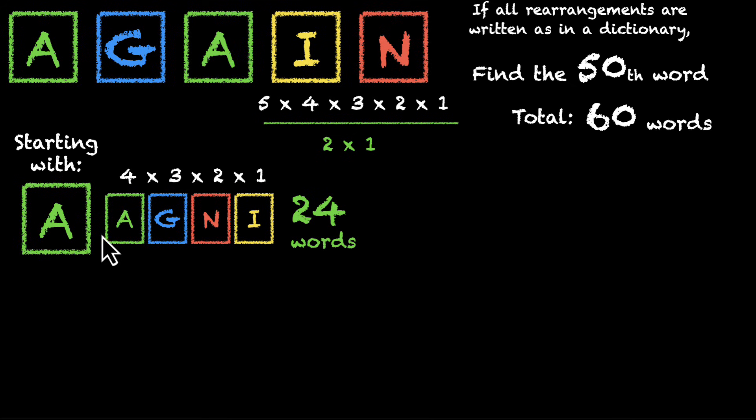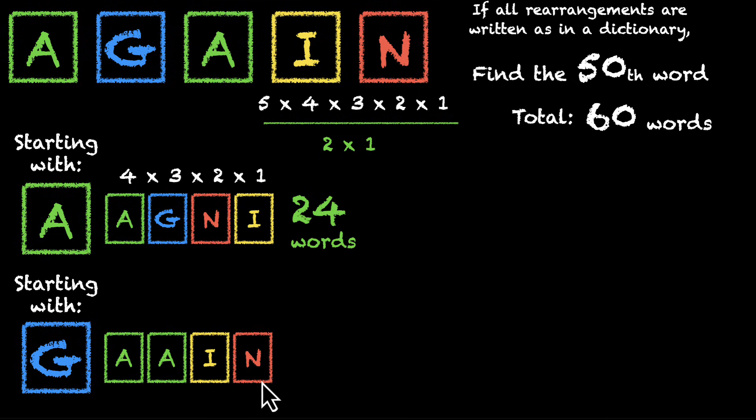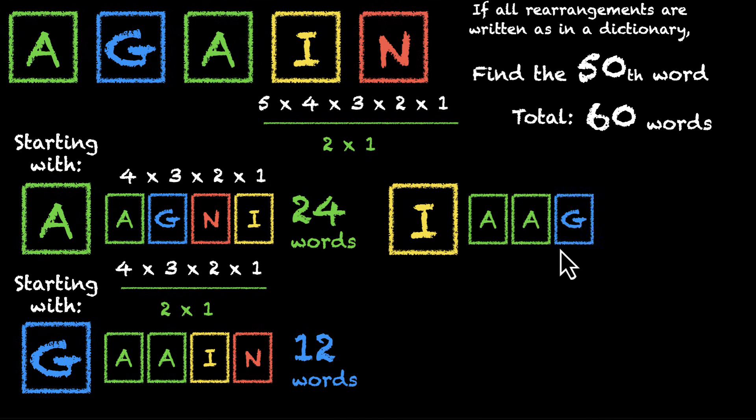What's going to be next? The next letter is G. And how many words start with G? We have A, A, I, and N—these are the leftover letters. If we rearrange them, that's four times three times two times one, but we have to make room for correction because we have two A's, so divide by two. We get 12 words. Next comes I. So how many words start with I? The leftovers are A, A, G, and N. This is very similar, so we'll get 12 words here as well. Let's see where we are: 24 plus 12 is 36, plus 12 is 48. We're very close to 50. We can actually manually count.